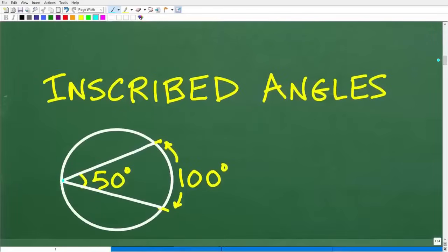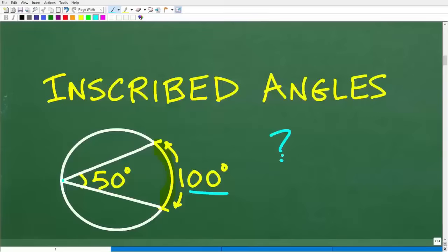Here is an inscribed angle. Notice here the angle is 50 degrees, and I'm saying that the arc it forms is 100 degrees. So if you have an inscribed angle of 50 degrees, the arc it forms is 100 degrees. What do you think the formula would be for an inscribed angle given the arc it forms?